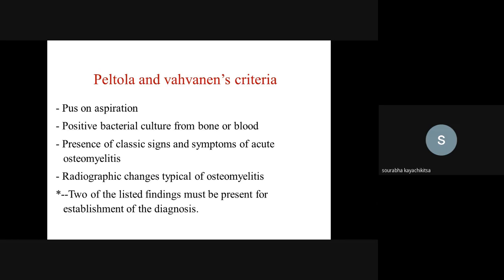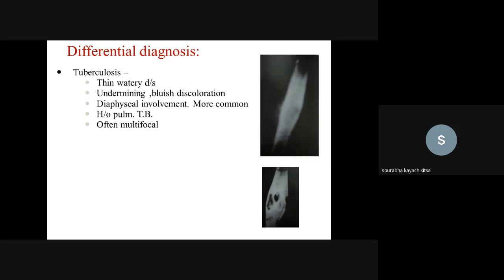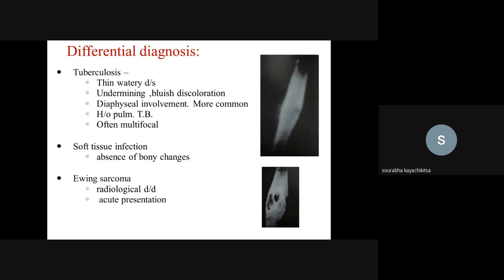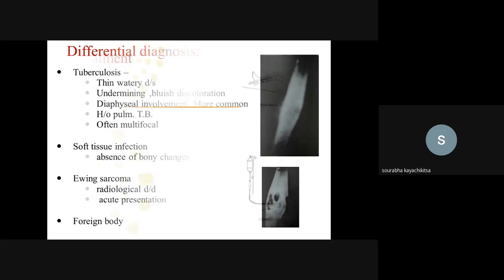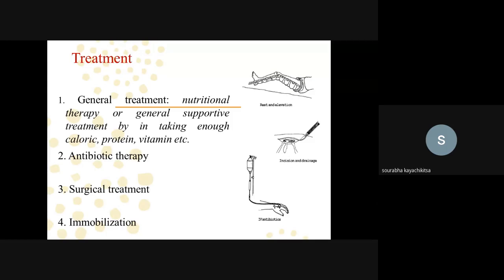The Peltola and Unkila-Kallio criteria are used to diagnose osteomyelitis. The four criteria are: pus on aspiration, positive bacterial culture from bone or blood, presence of classical signs and symptoms of acute osteomyelitis, and radiographic changes typical of osteomyelitis. If two of these four criteria are present in a patient, osteomyelitis is confirmed. Differential diagnosis includes tuberculosis, soft tissue infection, sarcoma, or foreign body.